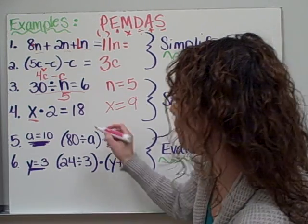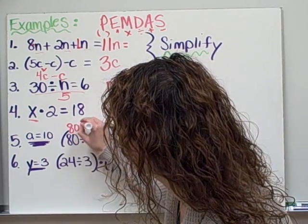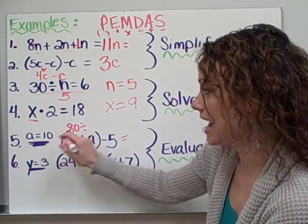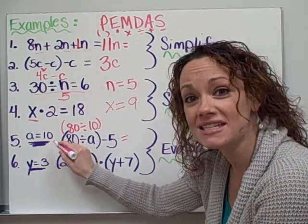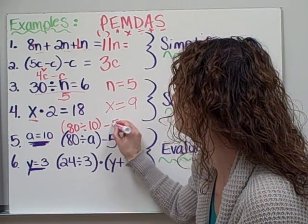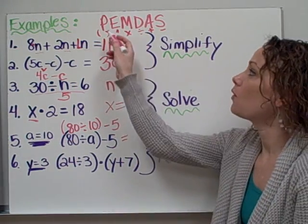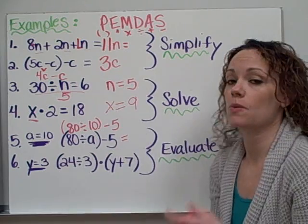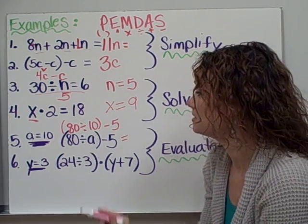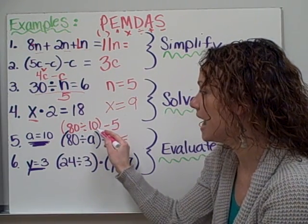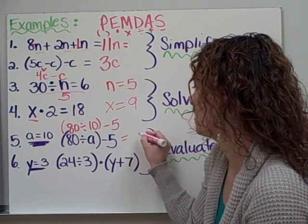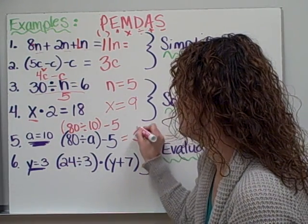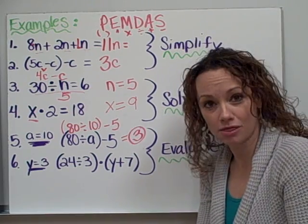80 divided by 10, because they told me that a is worth 10, minus 5. And using my order of operations, I have parentheses, so I must do whatever is in parentheses first. 80 divided by 10 equals 8. And then 8 minus 5 is 3. So my final answer would be 3.